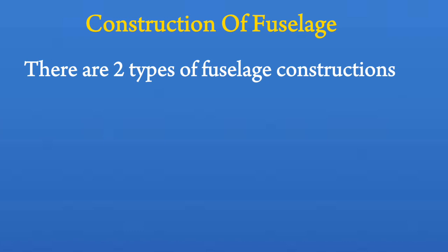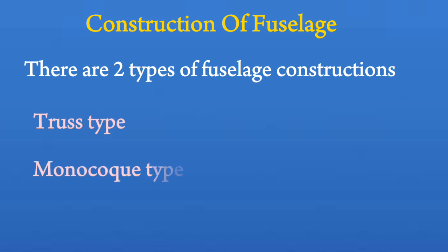Construction of fuselage. There are two types of fuselage constructions: truss type and monocoque type.